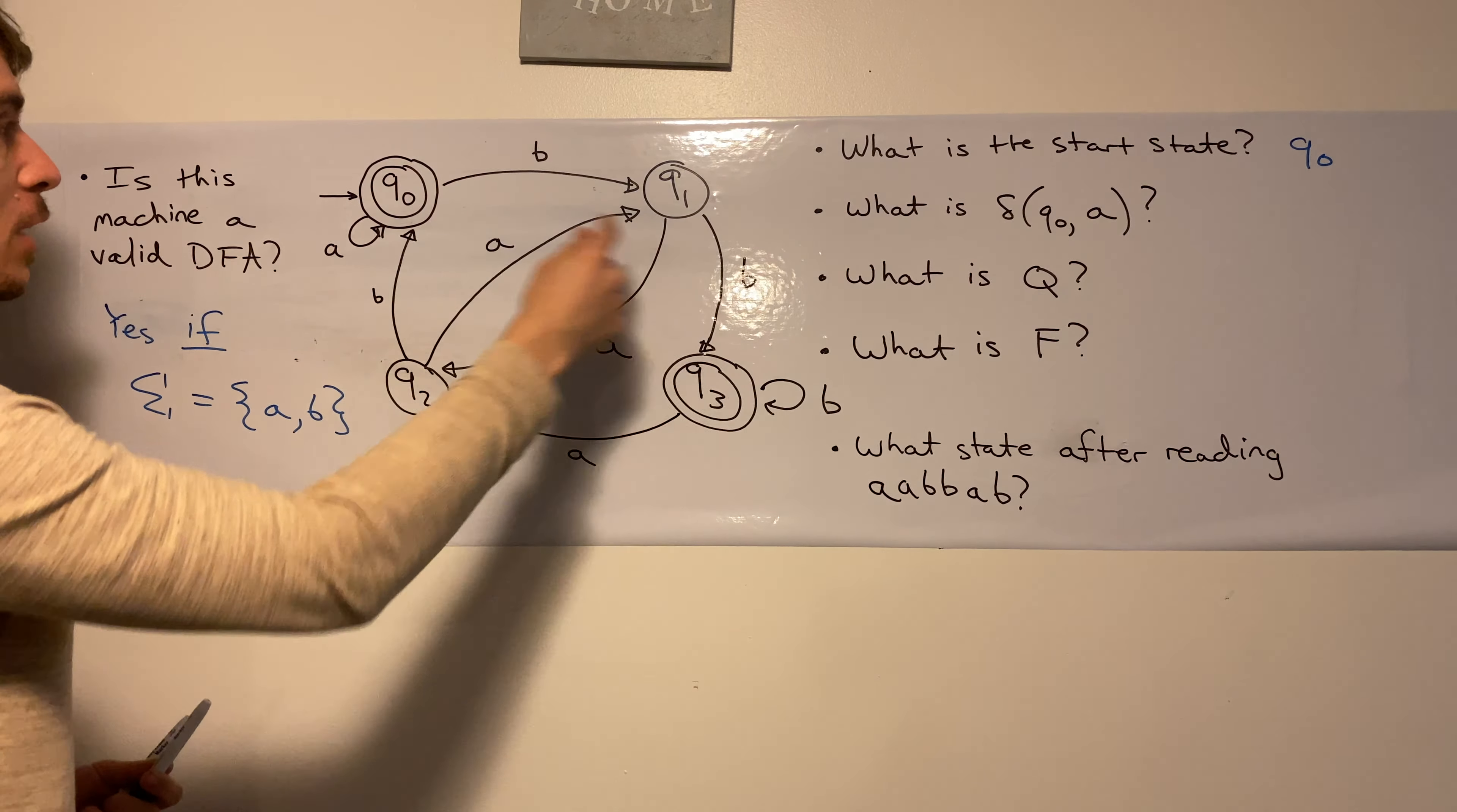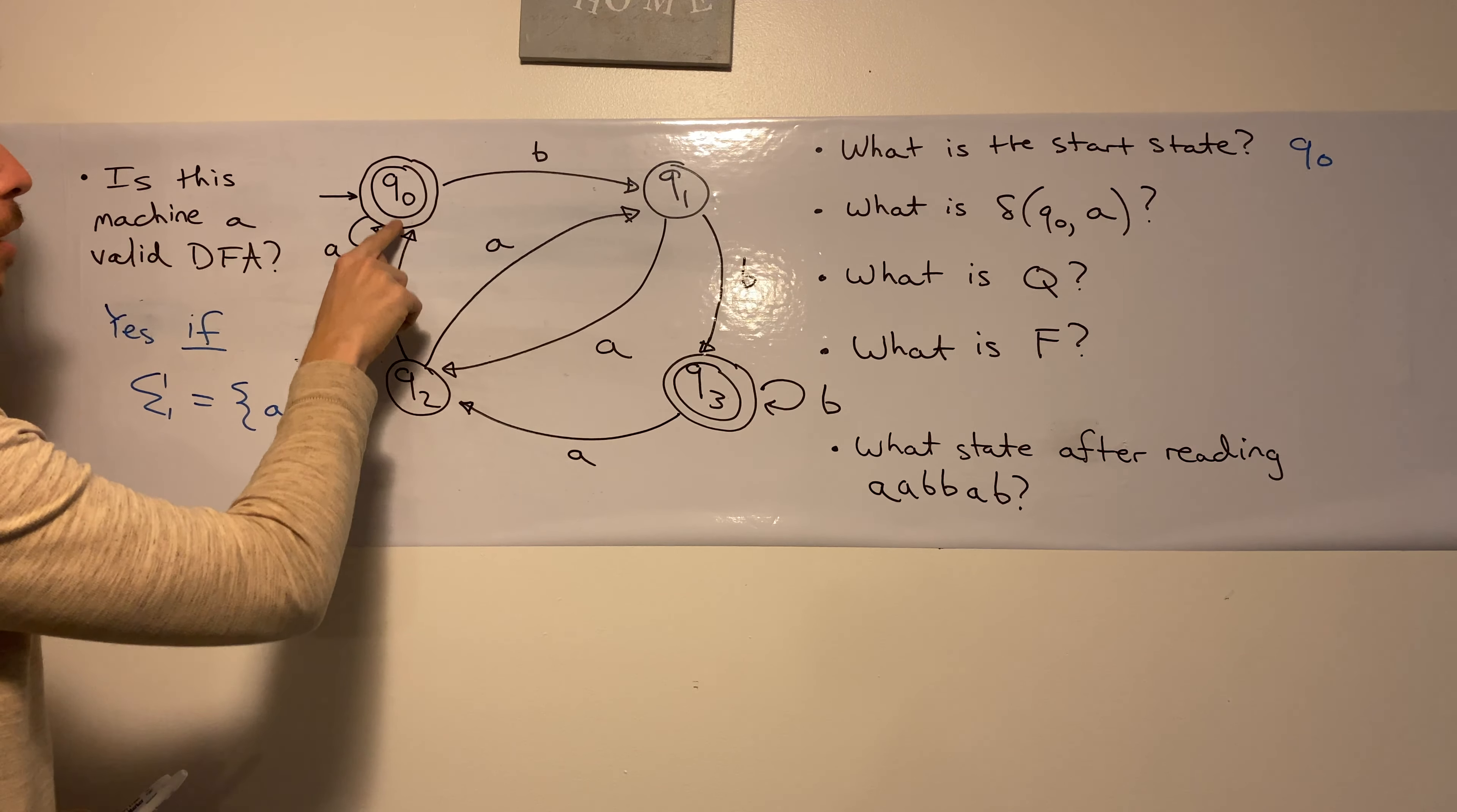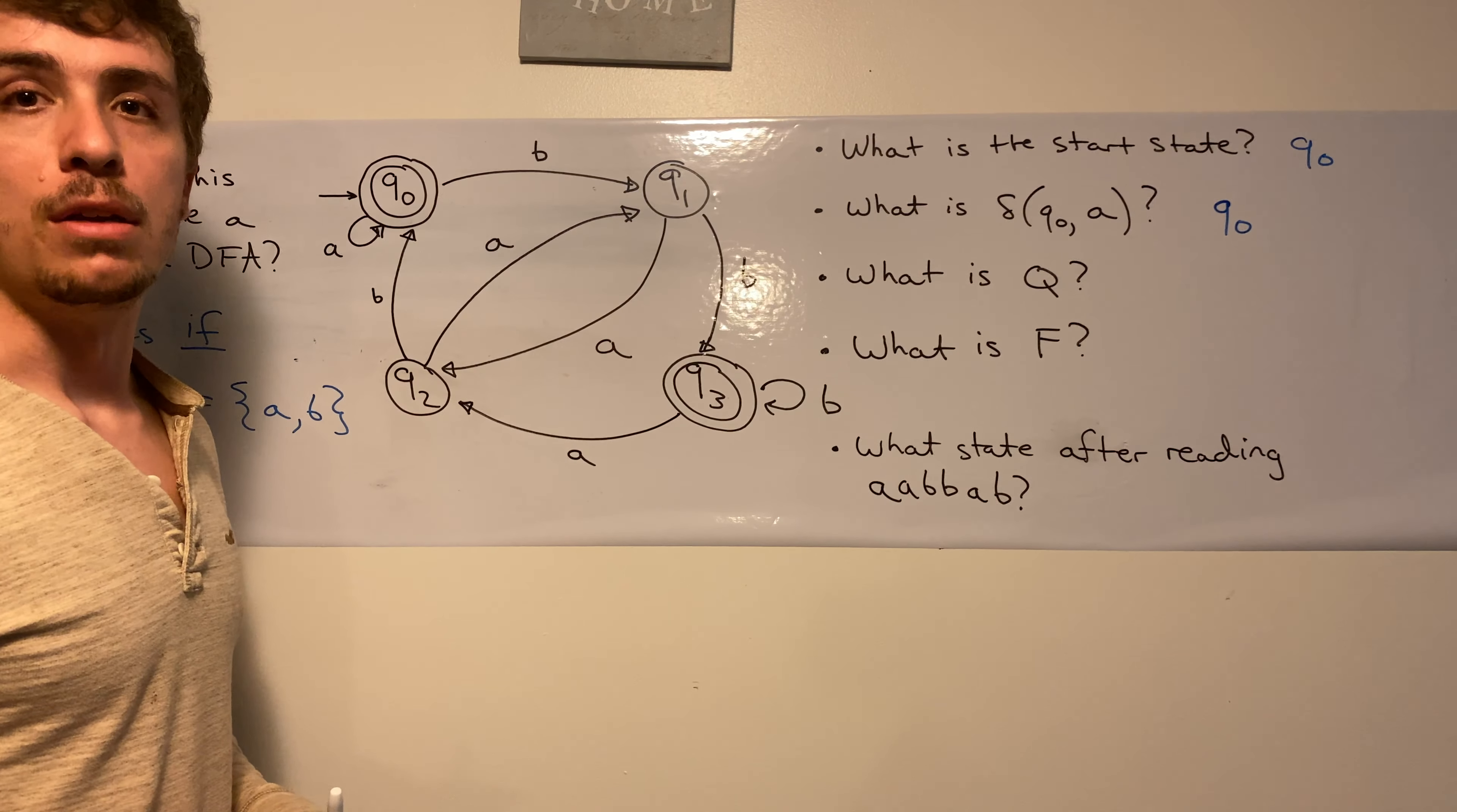Well, if we look at this picture, all that we need to do is just find where the arrow goes. So if we're in Q0, and we follow the transition labeled A coming out of Q0, well, we see that there's a self loop right here at Q0. So we can confidently say that the state we end up in is Q0.